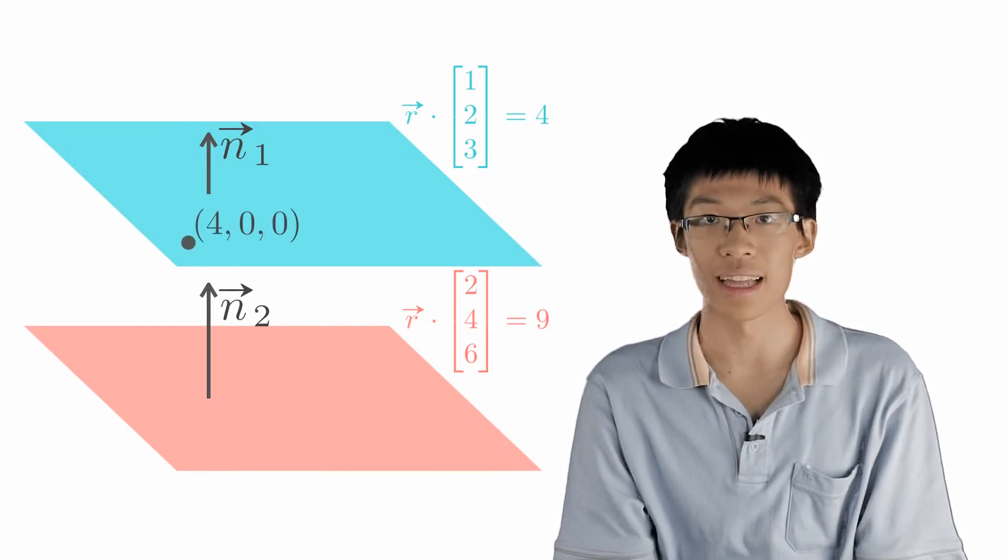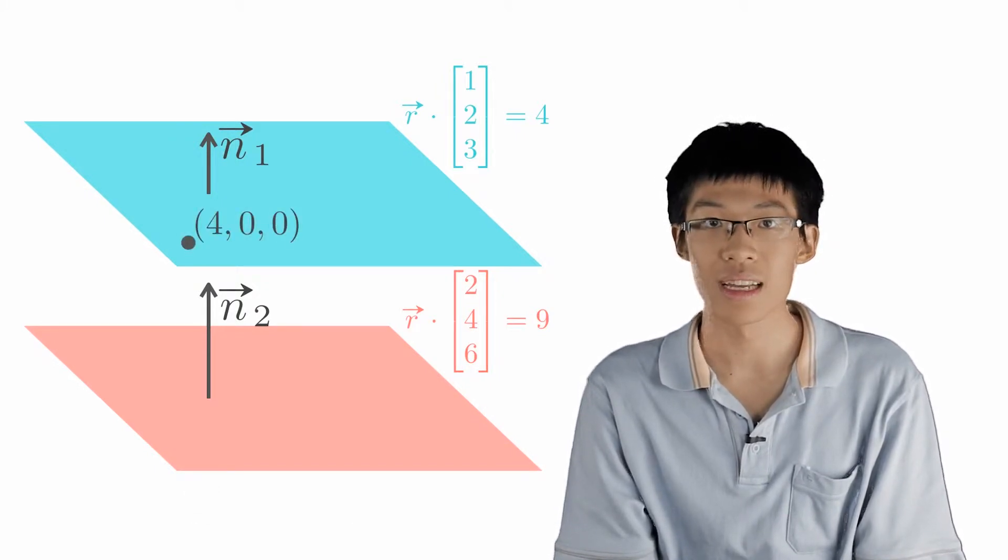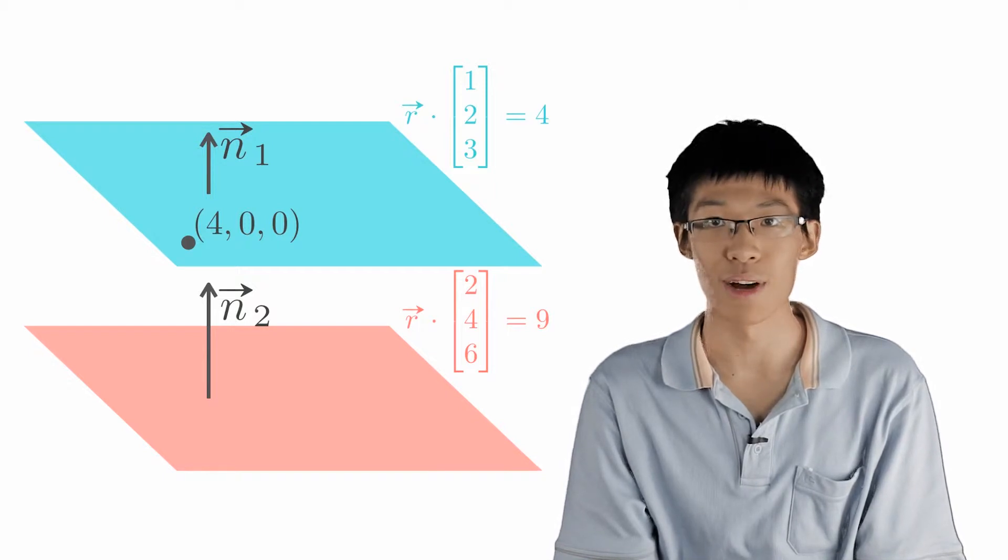Second, we need to show that they do not meet at any point. Let's just consider one point that's on plane π1.